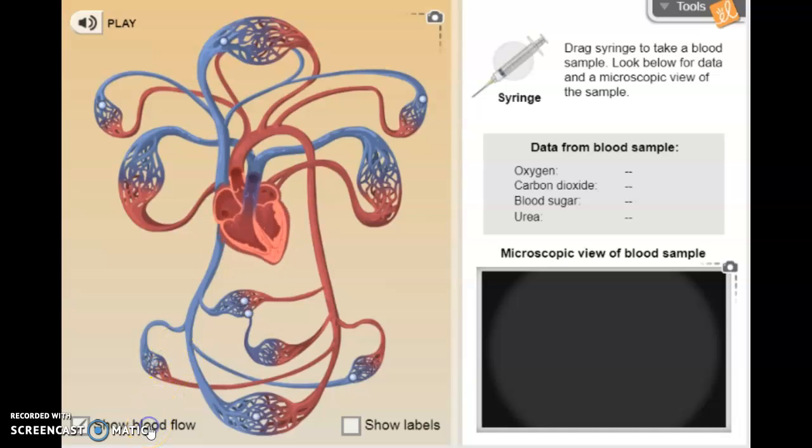When I click show blood flow you're gonna see those little dots move into the heart and back to the body, and that is representing the flow of the blood. You've got red and white blood cells flowing through that system. This is just a model of what that looks like.